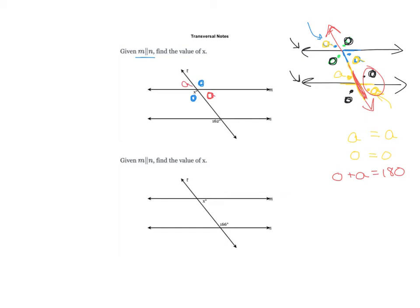Going down to the other picture, 162 is obtuse, and I can tell this looks obtuse, and these two are acute. Once I circle the two angles I'm working with, they're both o's, so that means x is the same as 162.